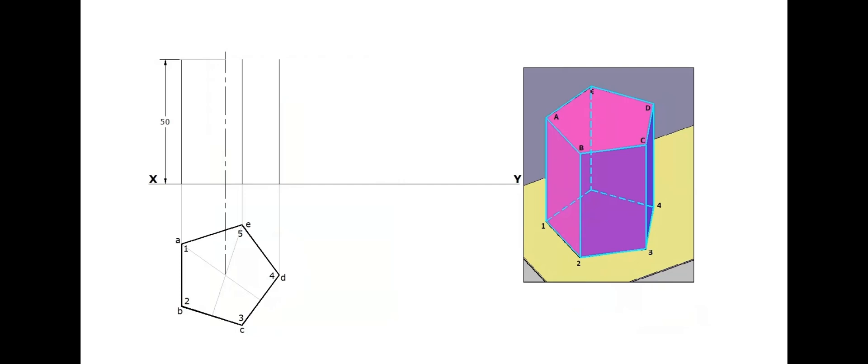The longer edge 5E is invisible, but here it is getting overlapped with a visible edge 3C. The bases which are perpendicular to HP are visible as straight lines. Name the points accordingly. Thus the projections of the first stage are over.